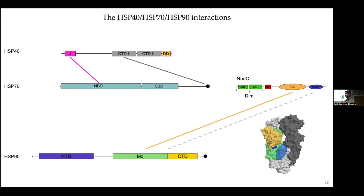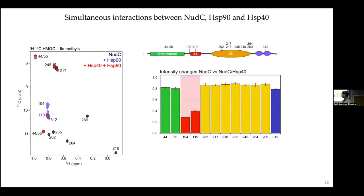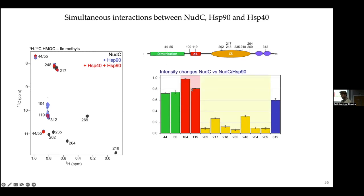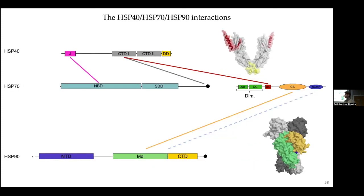We've looked at NUTC's interaction with HSP90 on one end and HSP40 on the other — but can both proteins interact simultaneously with NUTC? We labeled NUTC with only isoleucine methyls, giving 11 methyls well spread along the sequence so we can see every substructure. Adding HSP40 shows binding only in the alpha-4 region as expected; adding HSP90 shows intensity loss in the CS region and slightly on the terminal helices, as expected. Adding both proteins simultaneously results in intensity loss in both binding sites, demonstrating that NUTC is able to connect HSP40 to HSP90 directly.